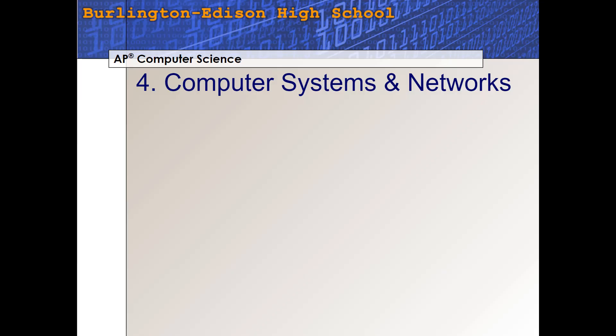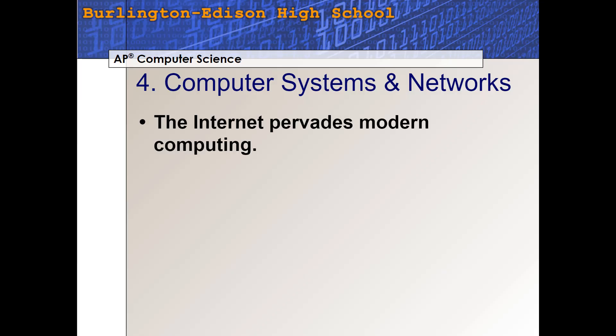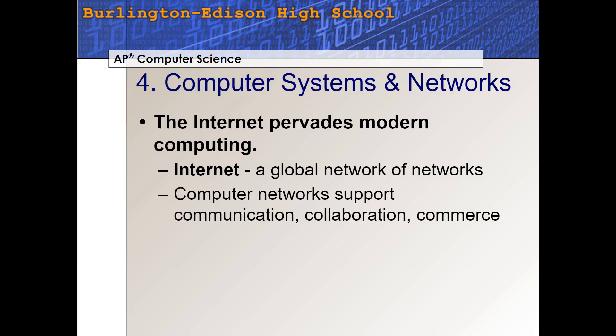Big idea number four: Computer Systems and Networks. This used to be called just 'the internet,' but they decided to broaden it a little to say computer networks. The internet is the biggest network of all, and we'll talk a lot about it in this class. The internet pervades modern computing. If you had to define it, the internet is simply a big global network of networks — it's the mother of all networks, really made up of a lot of smaller networks. Almost every organization and institution has a computer network of some type. The school you go to, the business where your parents work — people even have computer networks in their homes.